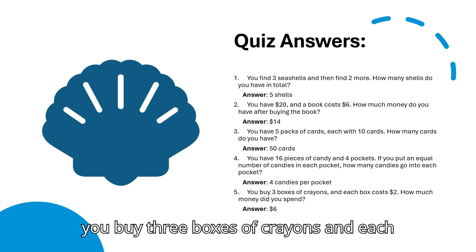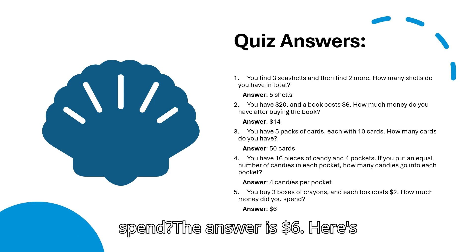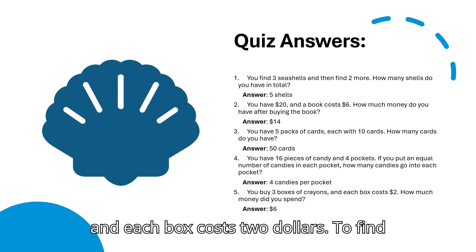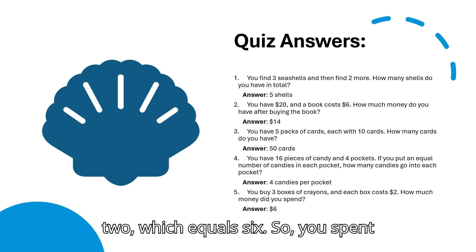Question 5: You buy 3 boxes of crayons, and each box costs 2 dollars. How much money did you spend? The answer is 6 dollars. Here's the explanation. You purchase 3 boxes, and each box costs 2 dollars. To find out the total cost, you multiply 3 by 2, which equals 6. So, you spent 6 dollars.